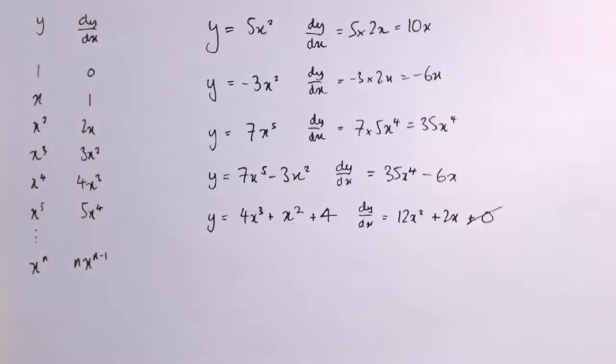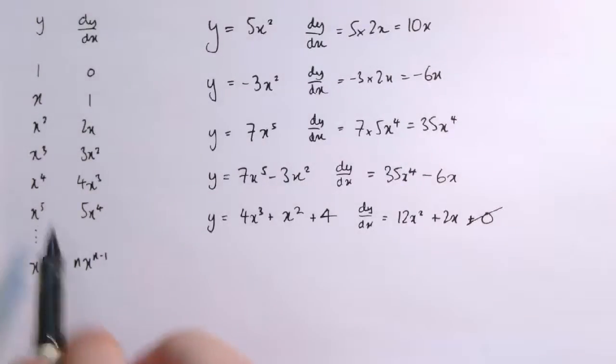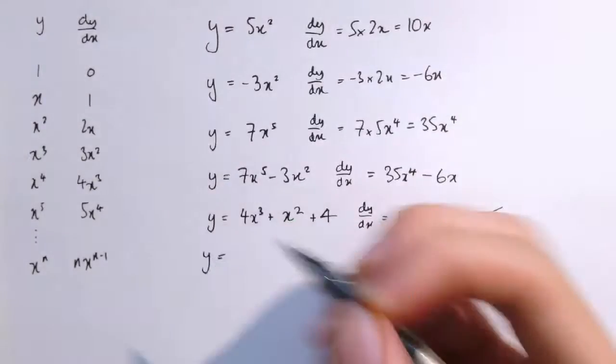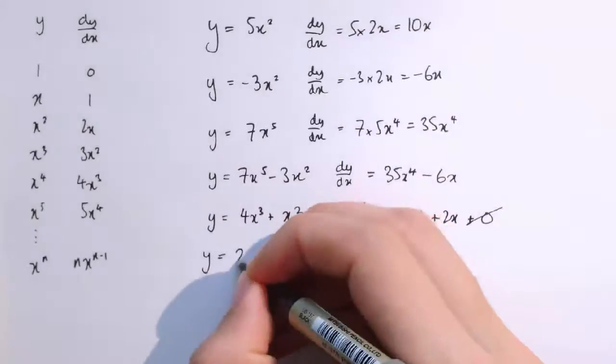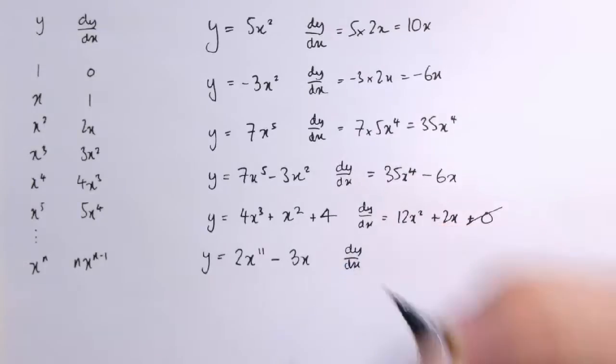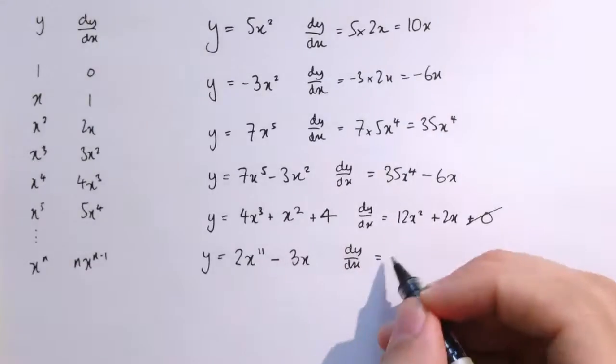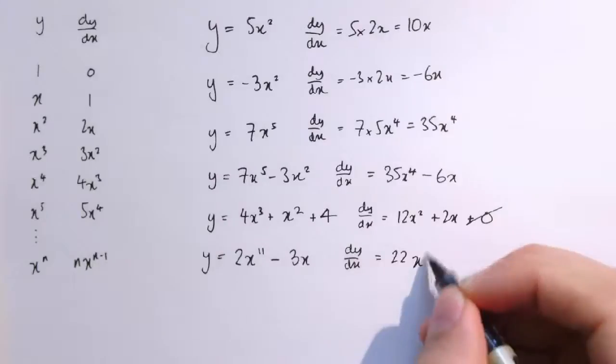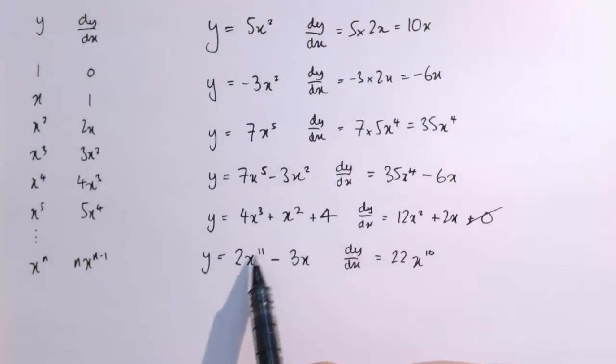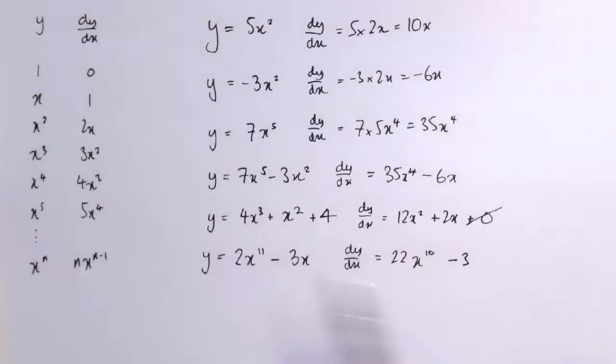So we can differentiate quite a lot of different sorts of functions now. Essentially, anything that's just a linear combination of additions and subtractions of these sorts of things we can do. So actually, we can differentiate anything which is what we call a polynomial function. So if I had even something not on the list, y equals 2x to the 11 minus 3x, then I could say, well, dy/dx is equal to, well, I'm going to move the 11 down and get 2 times 11 is 22. 11 minus 1 is 10. The derivative of x to the 11 would have been 11x to the 10. I've just multiplied it by 2. And minus 3x, so that's minus 3. And that's that.